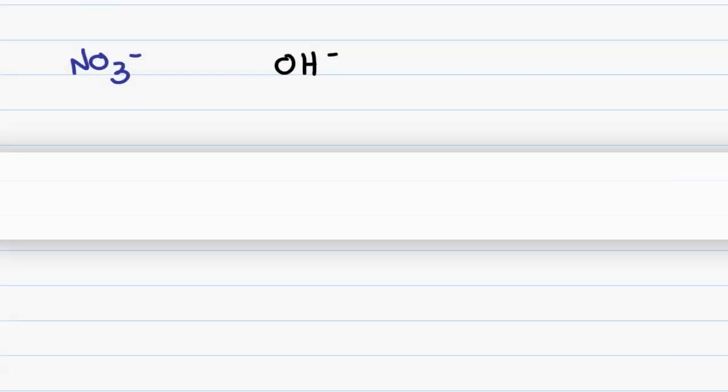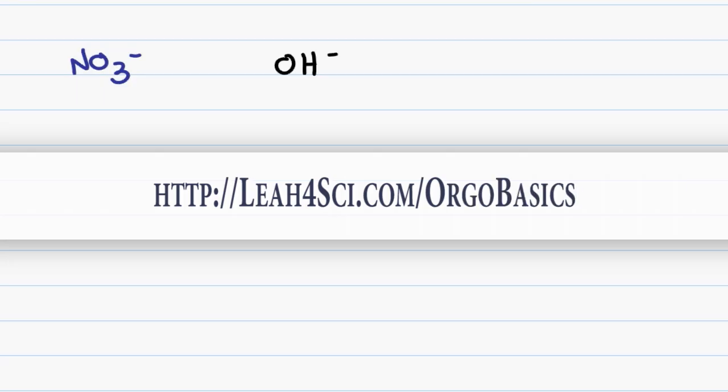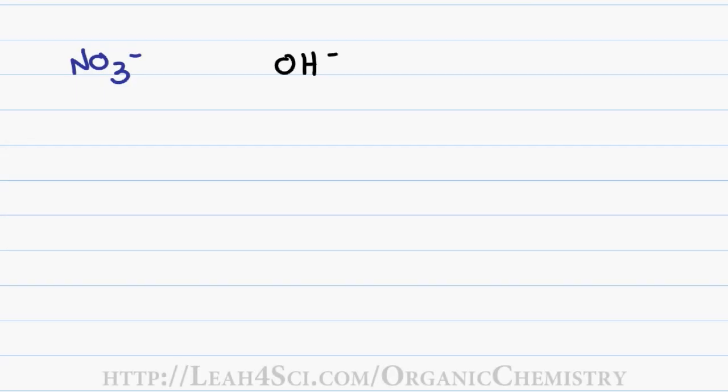You can find this entire series on my website at leah4sci.com/orgobasics. When you learn polyatomic ions in general chemistry, you drew out the Lewis structure for the molecule, put the entire thing in brackets and then put the charge on the outside. In organic chemistry, it's important to understand exactly where that charge comes from in terms of which atom is charged, what the specific charge is and why.